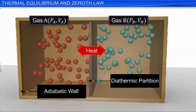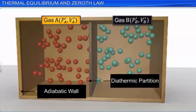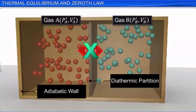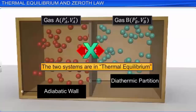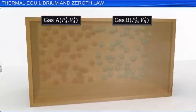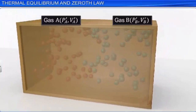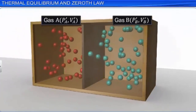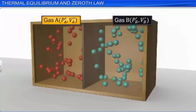After sufficient time, the gases settle at different equilibrium states PA', VA' and PB', VB', and there will be no further exchange of heat energy between them. We say that the two systems are in thermal equilibrium. Two systems A and B are said to be in thermal equilibrium when: (1) they are in contact with each other or separated by a diathermic wall, and (2) the state of system A is in equilibrium with the state of system B.